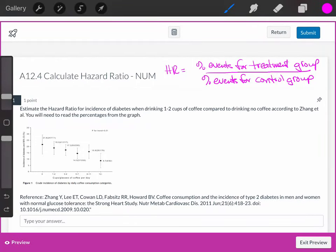All right, so let's calculate the hazard ratio for a set of data. This particular problem says estimate the hazard ratio for incidence of diabetes when drinking one to two cups of coffee compared to drinking no coffee, according to Zhang et al. You will need to read the percentages from the graph.